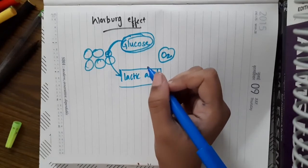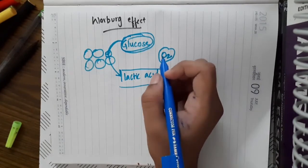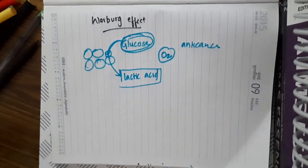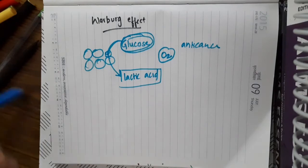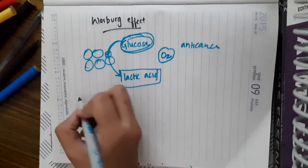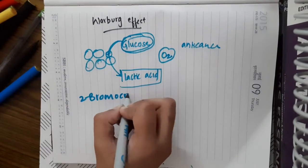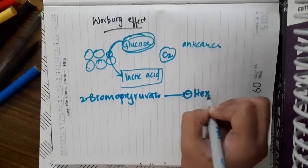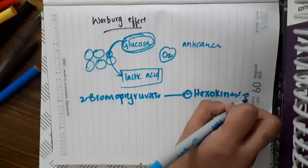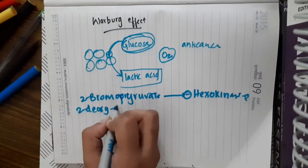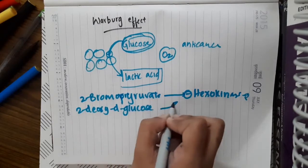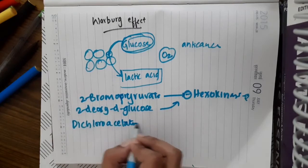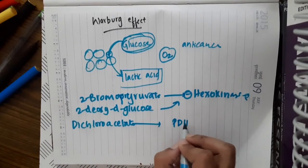This is called the Warburg effect. This phenomenon is used for development of anti-cancer drugs. The drug 2-bromopyruvate will inhibit the enzyme hexokinase-1, whereas 2-deoxy-d-glucose also inhibits this enzyme hexokinase. Dichloroacetate inhibits the enzyme pyruvate dehydrogenase kinase.